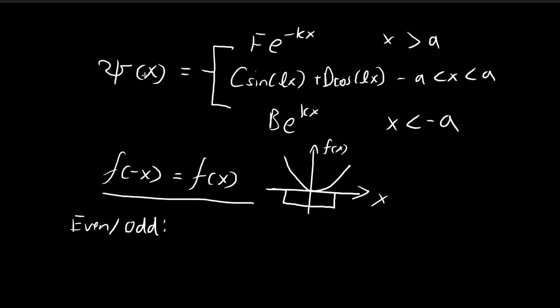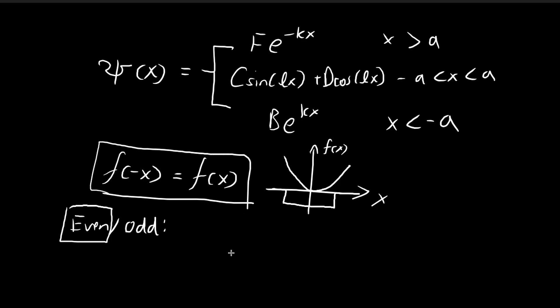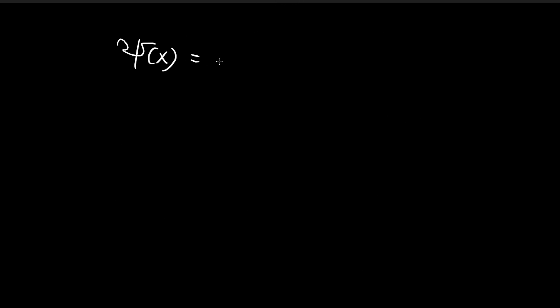In the demonstration that Griffiths gives in the book, he focuses on the solutions that are even functions, so that's what we're going to do — focus on the ψ(x)'s that are even functions. Now that we know ψ(x) is going to be an even function, we can modify the expression to be f·e^(-kx) when x is greater than a.